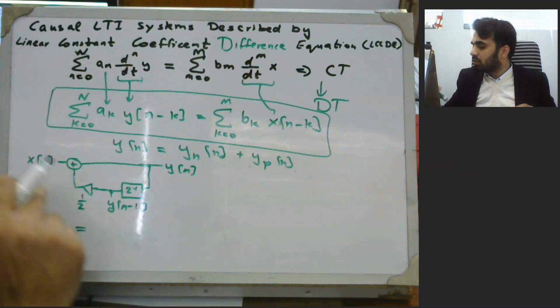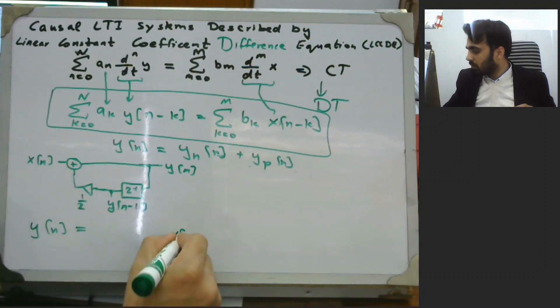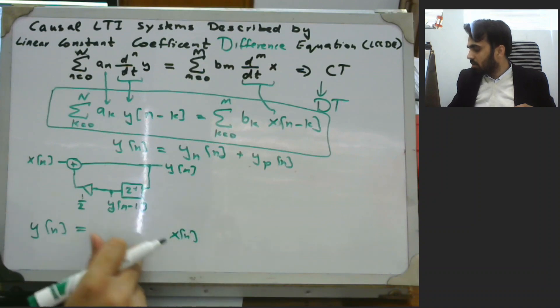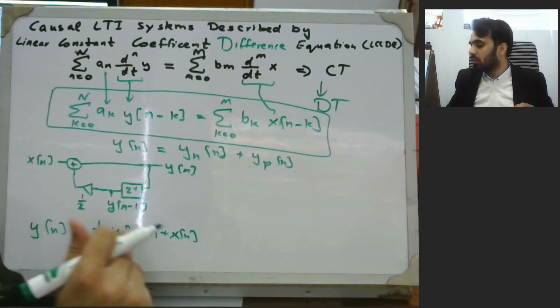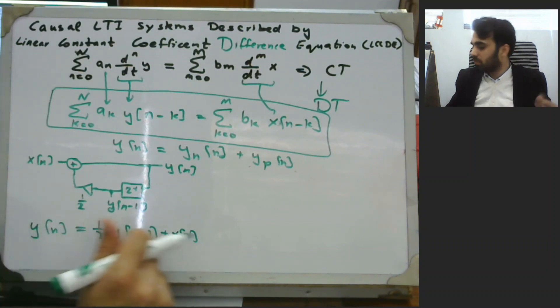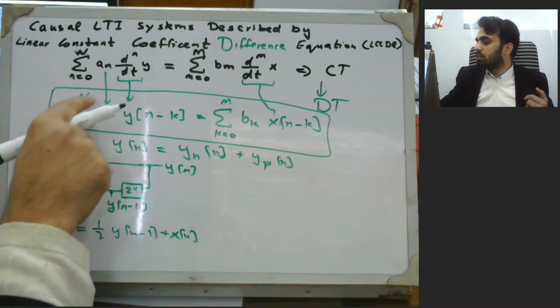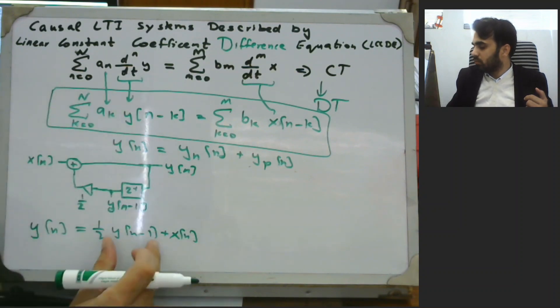Output y of n can be expressed in terms of the input, that is x of n, plus 1/2 times y of n minus 1. The output in terms of the first value of the output plus the input. So for this particular case the value of n is equal to 1. We have y of n minus 1. This is a first order difference equation.